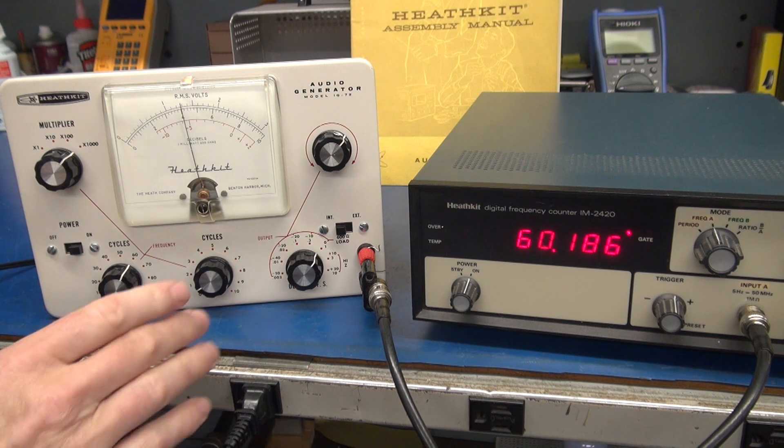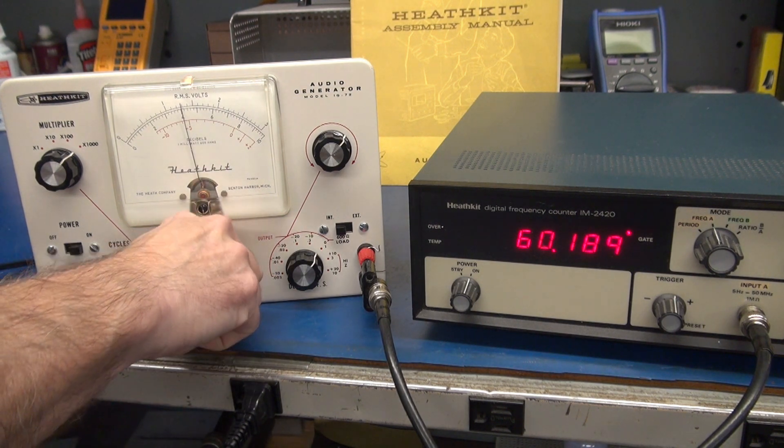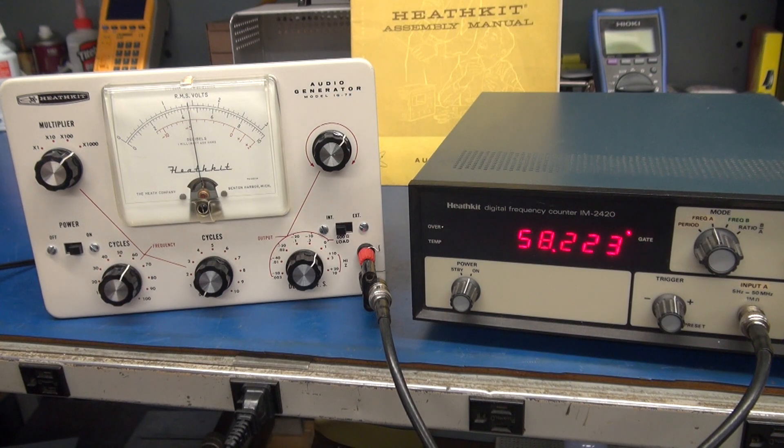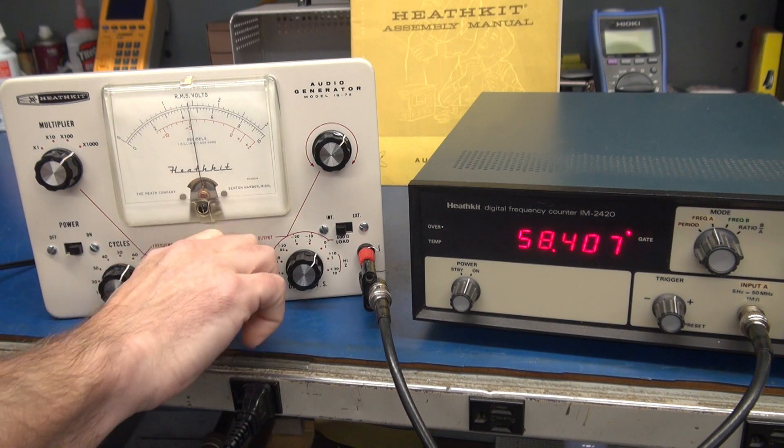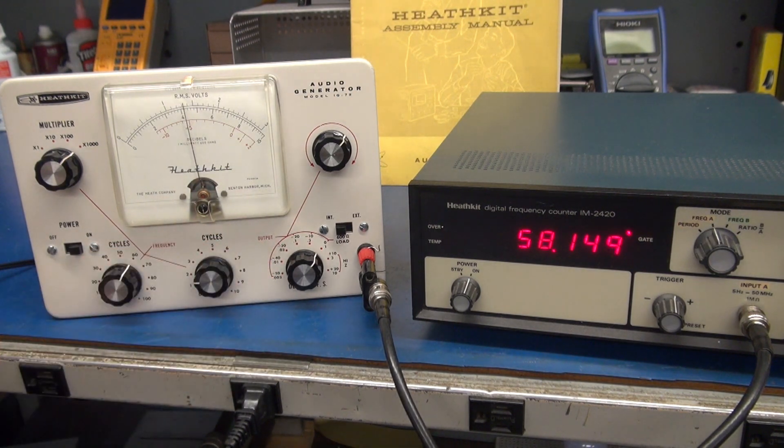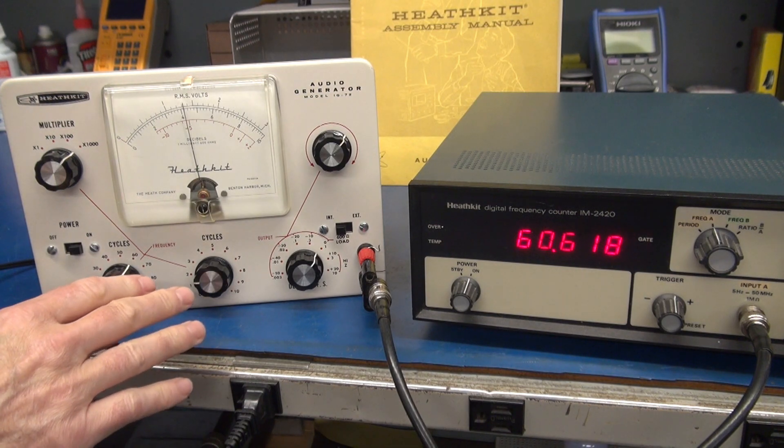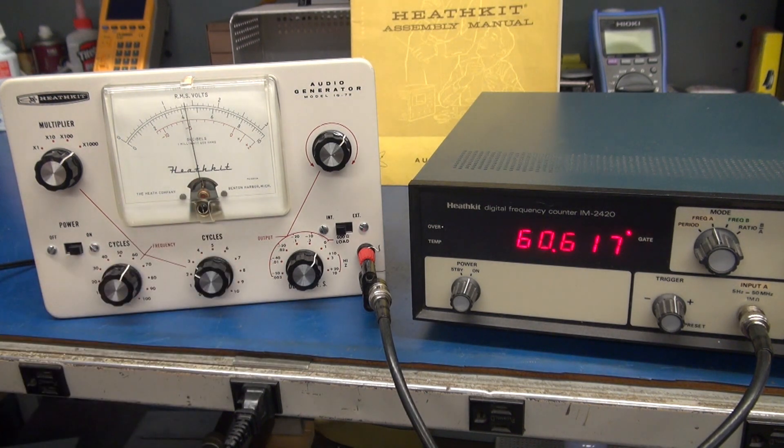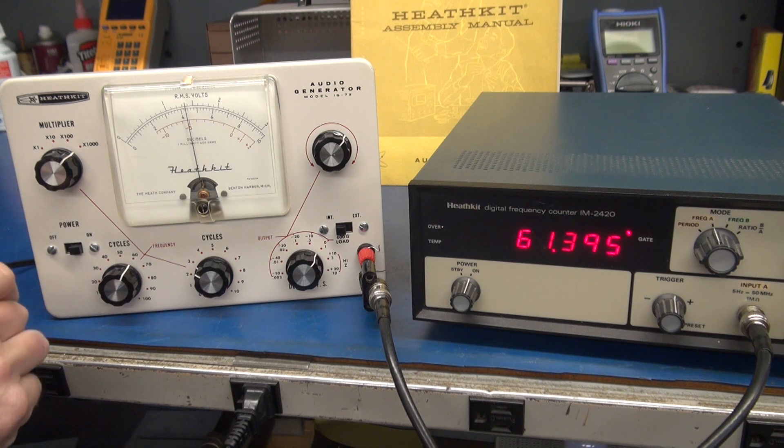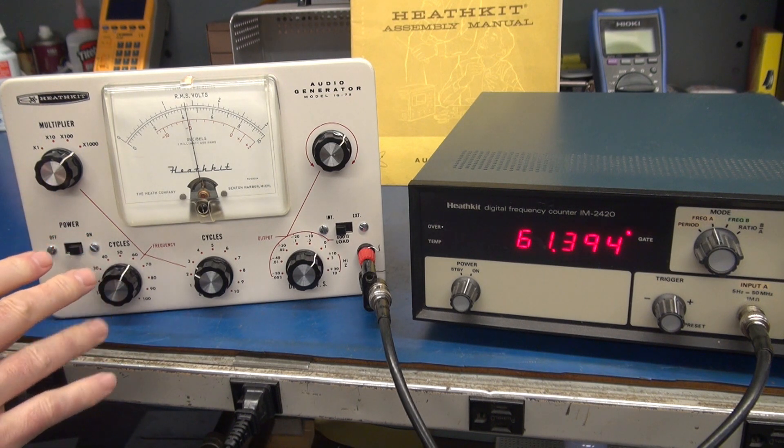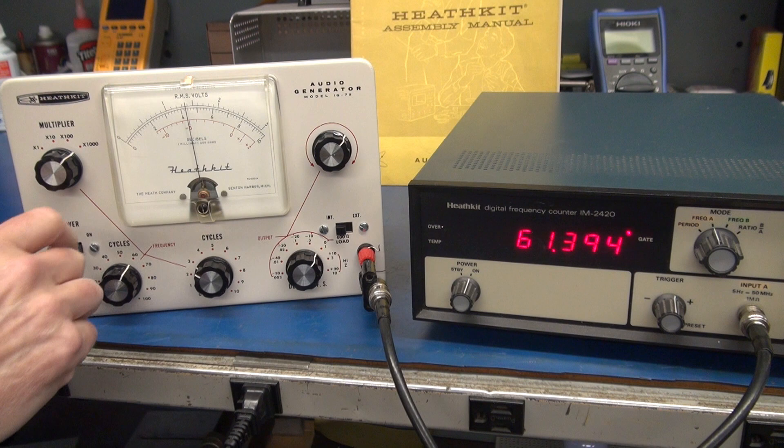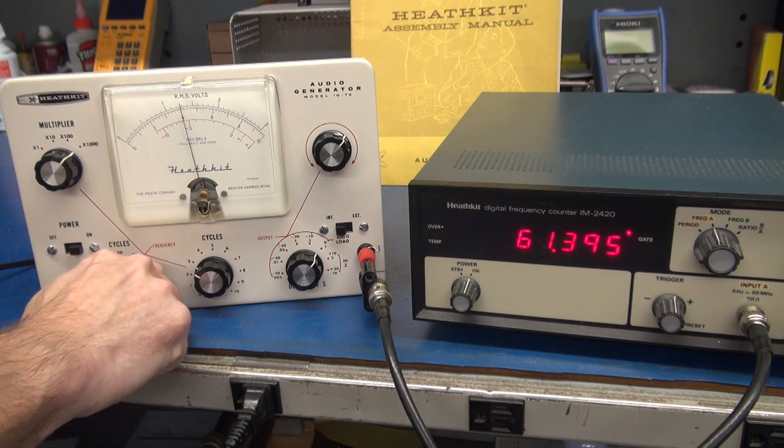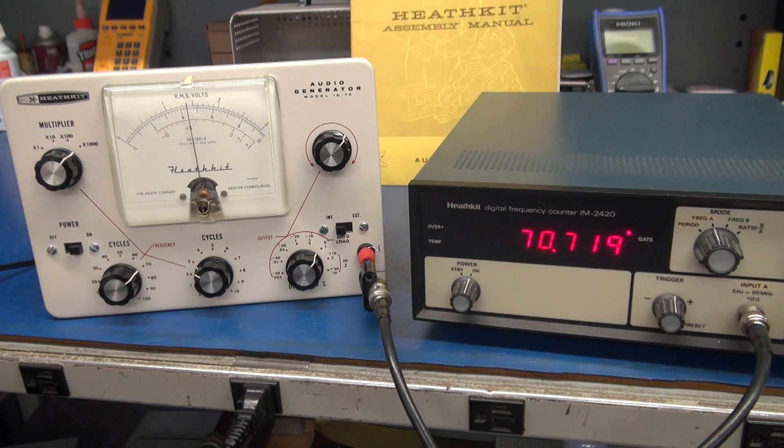Same thing. We're slightly over 60k and slightly under. So that is the purpose of the cycle switch. That is to kind of fine tune in your frequency. But for amplifier testing, it doesn't matter if you're off a hertz, right? You're using this as a signal source.